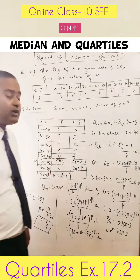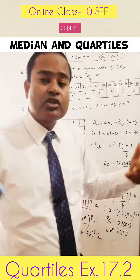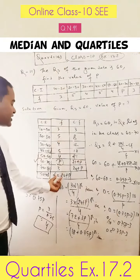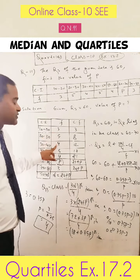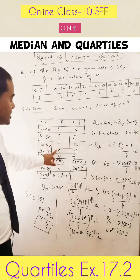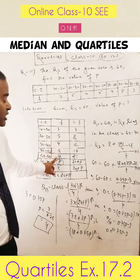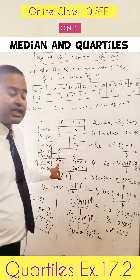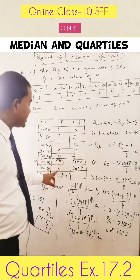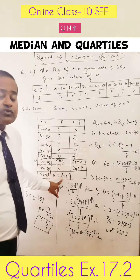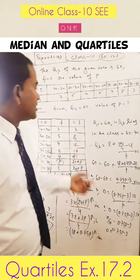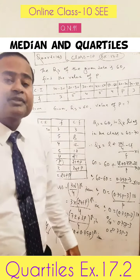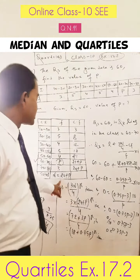The total number of items is the sum of frequencies. So 3 plus 5 is 8, plus 4 is 12, plus 5 is 17, plus 4 is 21, plus P we get 21 plus P, and 21 plus P plus 3 we get 24 plus P. So the sum of frequency, that means the total number of items N, is equal to 24 plus P.